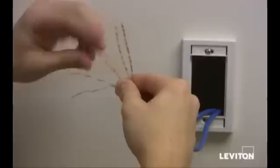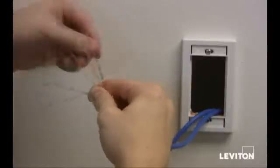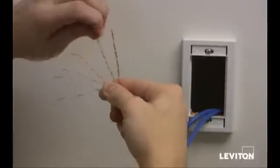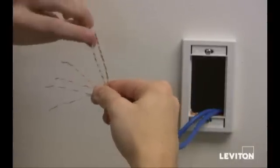Then untwist the wire pairs. This will make it easier to push them into the IDCs. Leave the twist intact to within about a half an inch of the IDC.